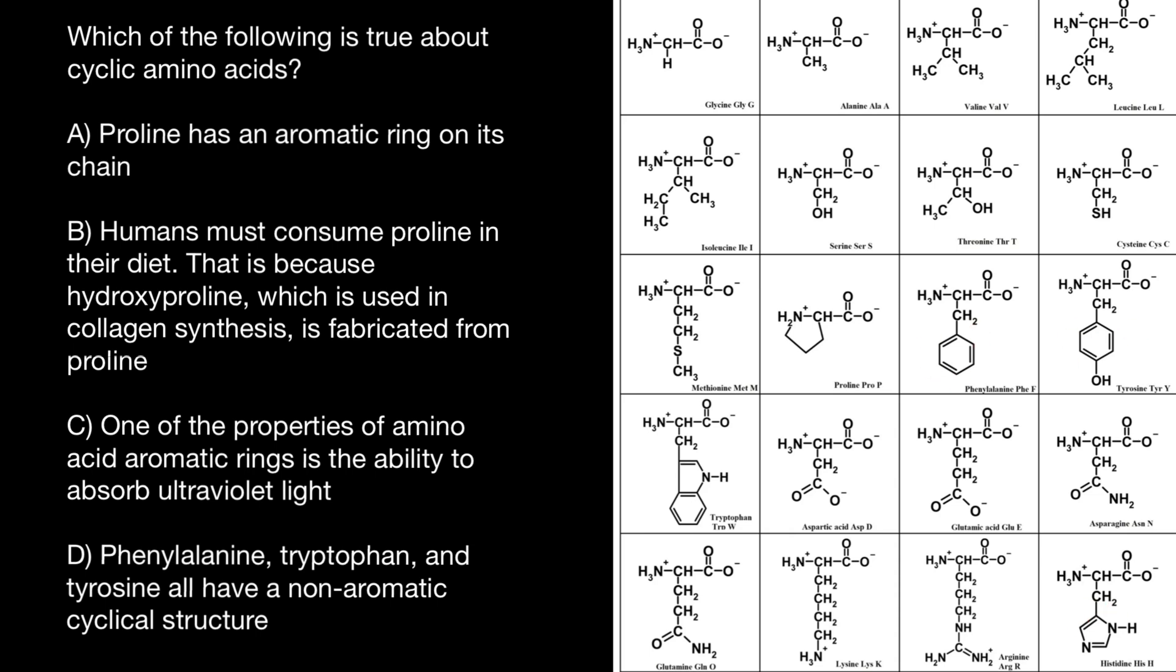because they have ring structure in R group. But proline is different from any other 20 amino acids because its R group is making a ring with amino group of the backbone.